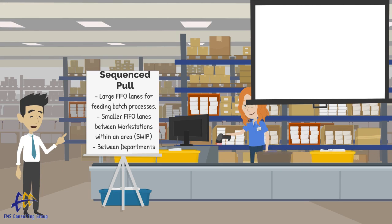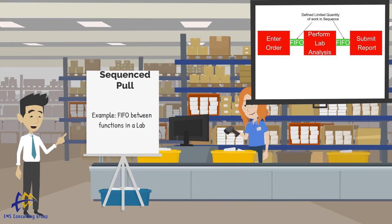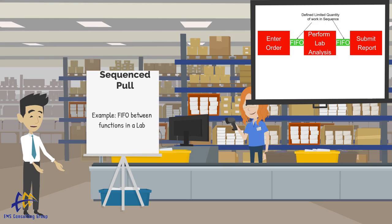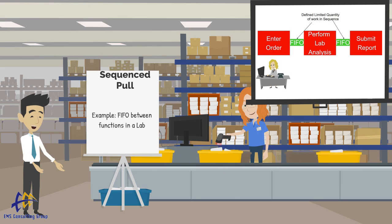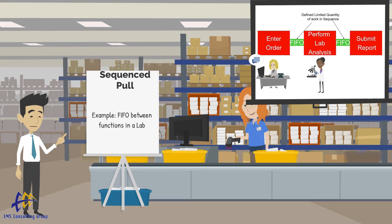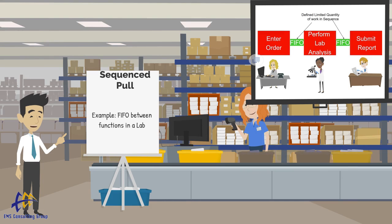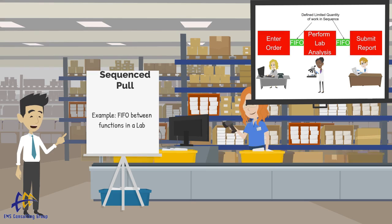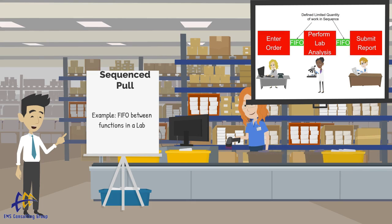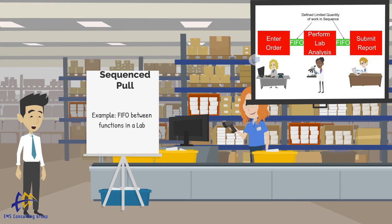Let's consider an example from a laboratory. Let's say we're running a lab that processes samples and there is a multi-step process. Here we have three processes connected by FIFO lanes: entering orders, performing lab analysis on a specimen, and creating and submitting a written report of the results. As the orders are entered, they are placed in first-in-first-out sequence into the FIFO lane. The lab technicians pull from the FIFO lane in the same sequence, do their work, and then pass the work on to the next FIFO lane for reporting.